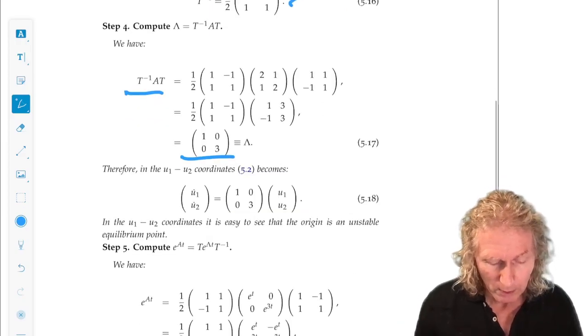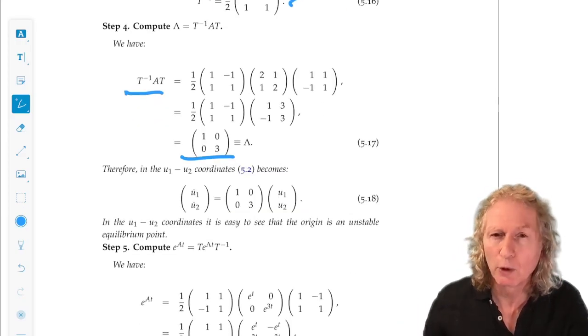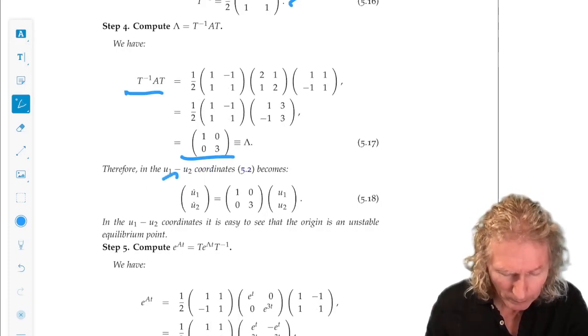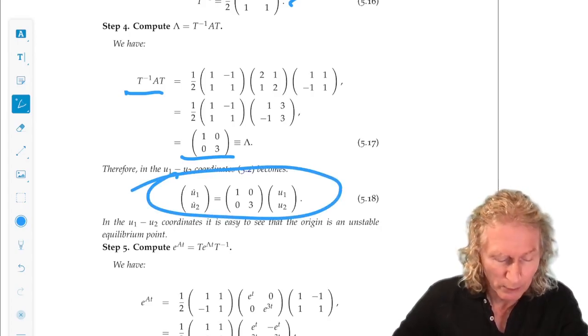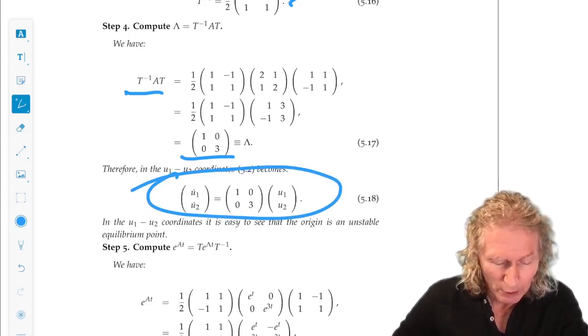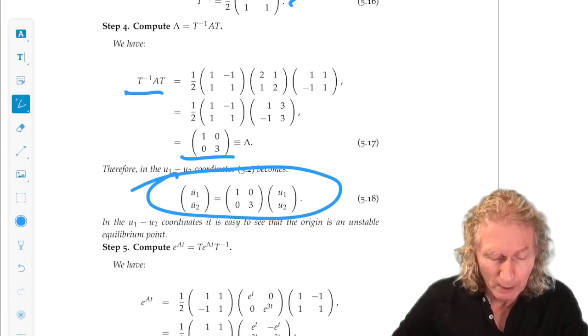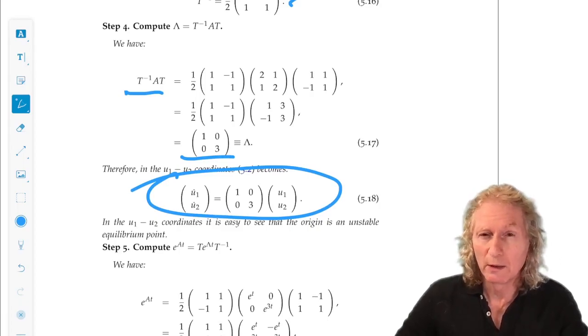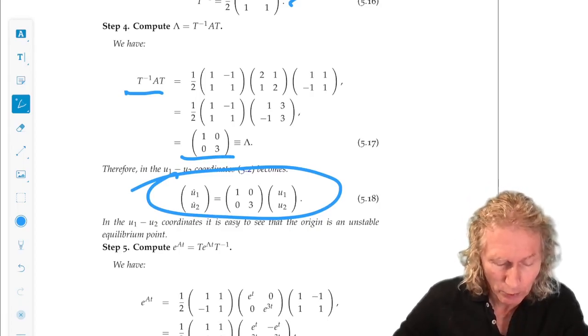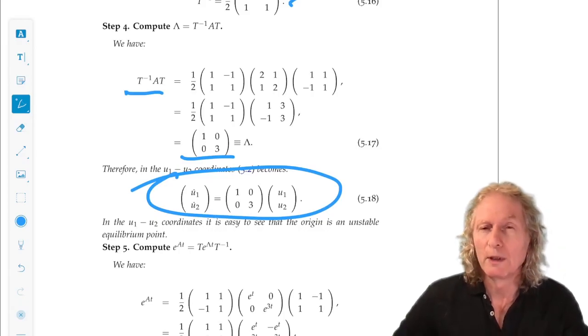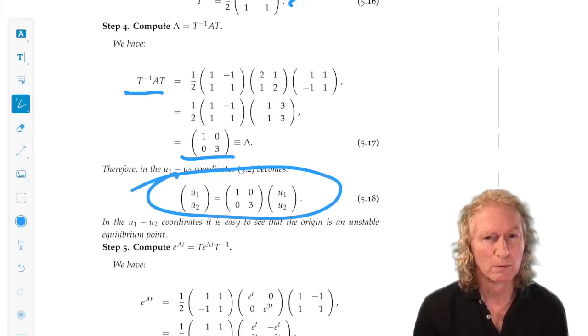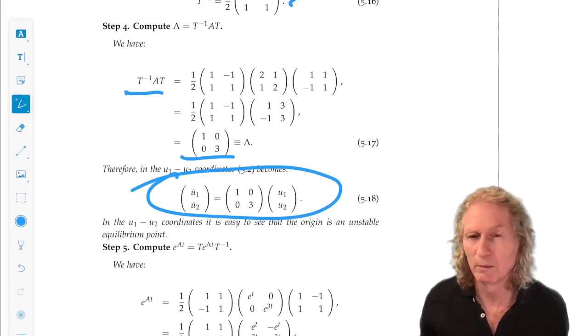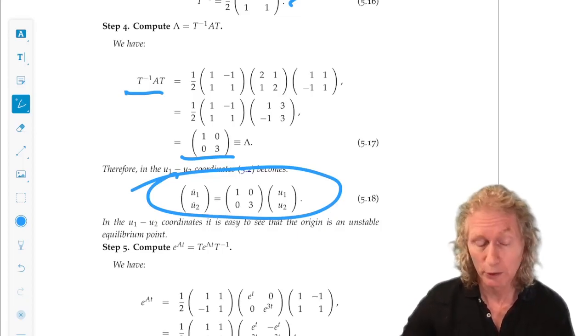So, in these eigencoordinates, this is what the system looks like. And you can solve that. You're expected to be able to solve it. U1 dot is U1 of t equals U1 dot e to the t. And U2 of t is U2 dot e to the 3t. So, the origin is unstable. Everything moves away at an exponential rate, in fact.